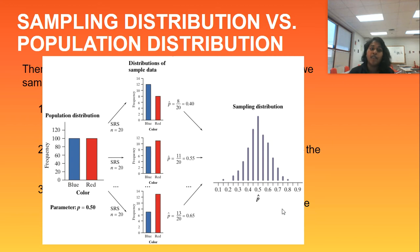I think we're associating P with red in this particular example. So our P hat value of the top one is 8 out of 20, 11 out of 20, and 13 out of 20. And so you can see these are each individual sample set.